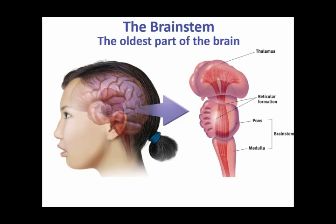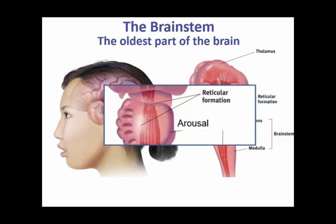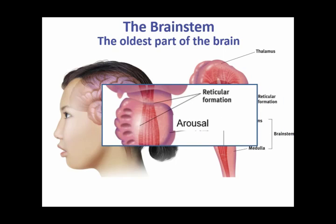The next level up is the reticular formation. The reticular formation is in charge of arousal — how awake and alert you are. When you're feeling sleepy in the evening, that's your reticular formation telling you it's time to get ready for bed. When you feel sleepier in the winter than in the summer, that's your reticular formation responding to the lower light in wintertime. So it's in charge of your sleep-wake circadian rhythm and your level of arousal.